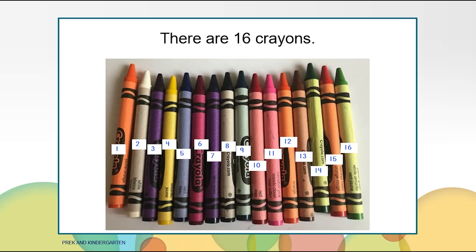If you lay them out straight you can count by ones. One, two, three, four, five, six, seven, eight, nine, ten, eleven, twelve, thirteen, fourteen, fifteen, sixteen. There are sixteen crayons.